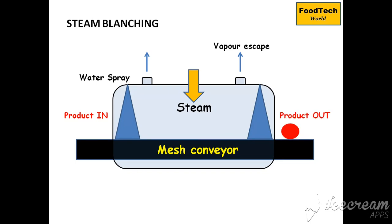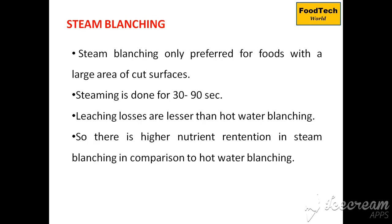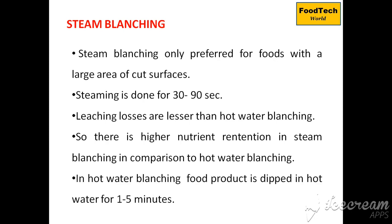The residence time of the food is controlled by the speed of the conveyor and the length of the tunnel. Steam blanching is preferred for foods with a large area of cut surfaces and is done for 30 to 90 seconds only. Leaching losses are lesser than in hot water blanching, resulting in higher nutrient retention. In hot water blanching, the food product is dipped in hot water for 1 to 5 minutes.